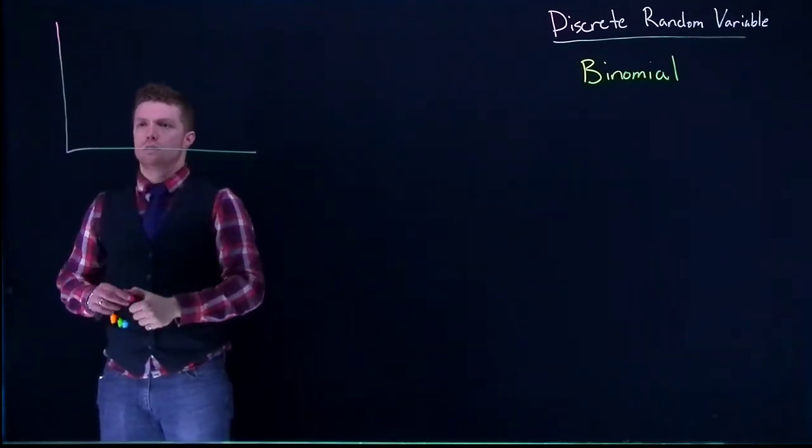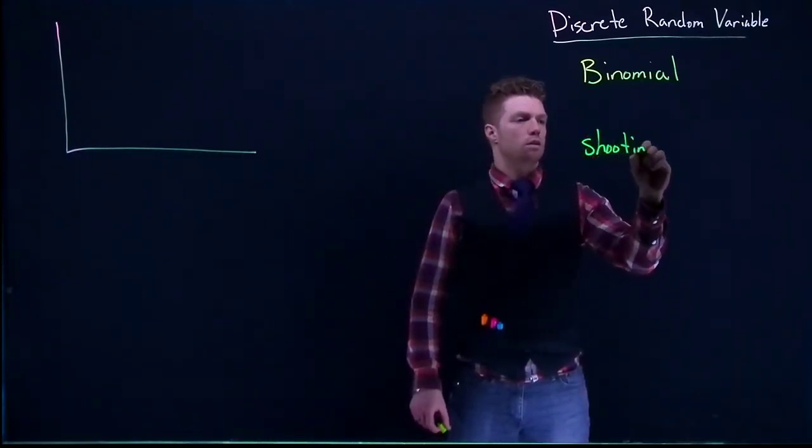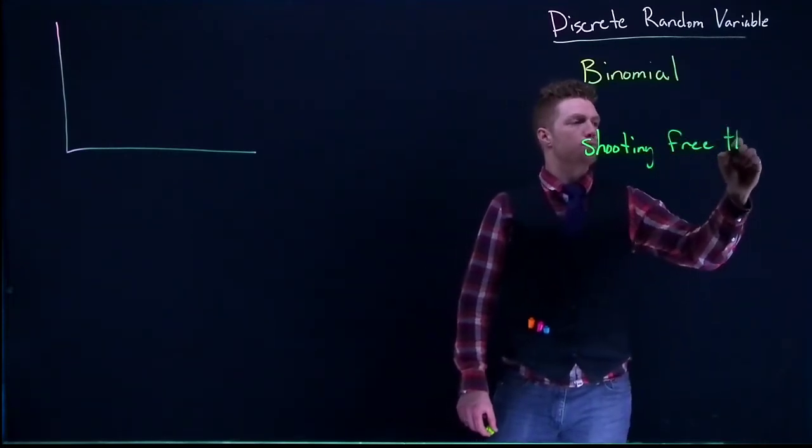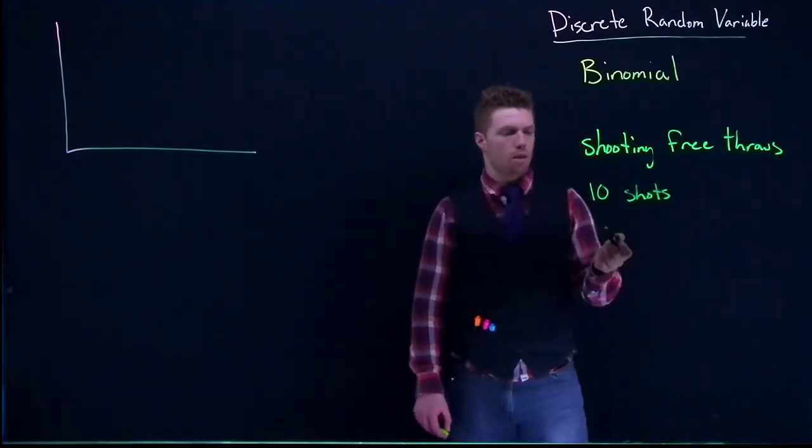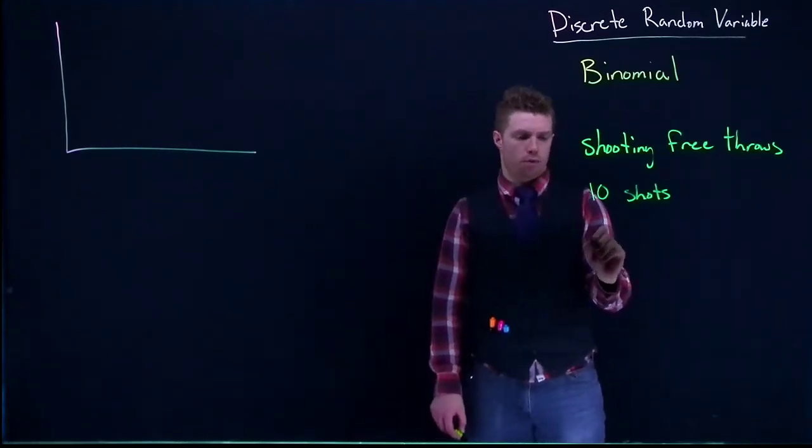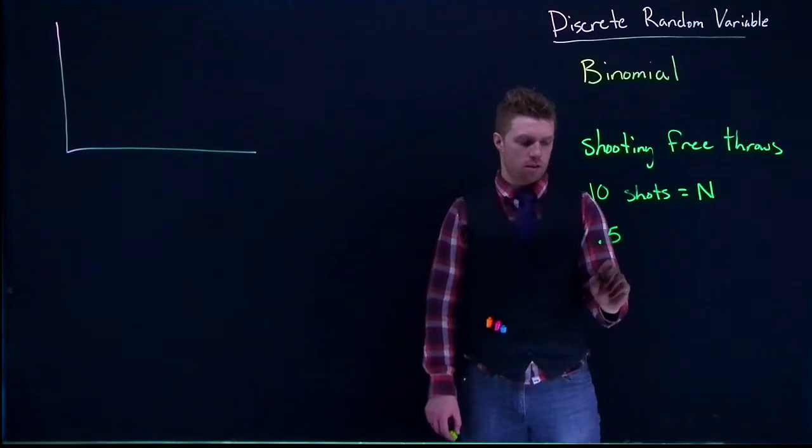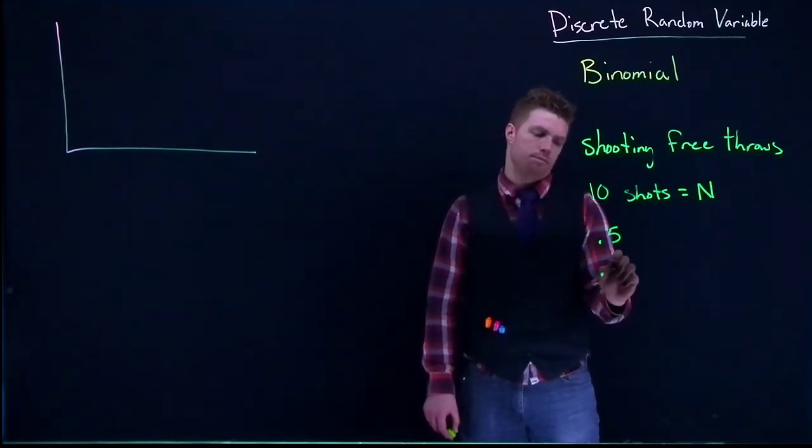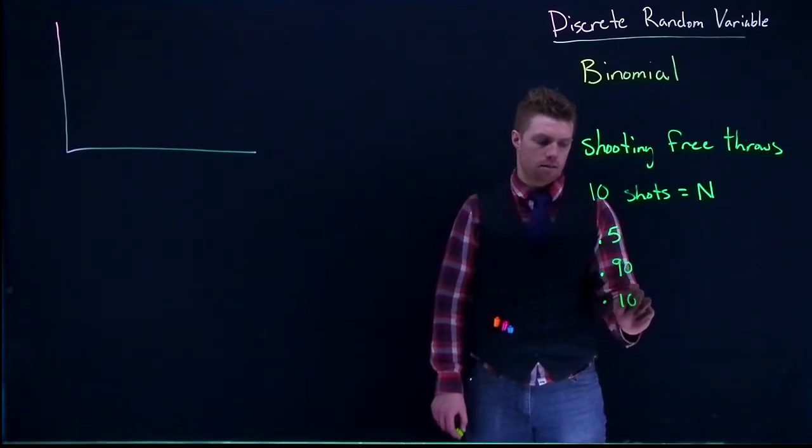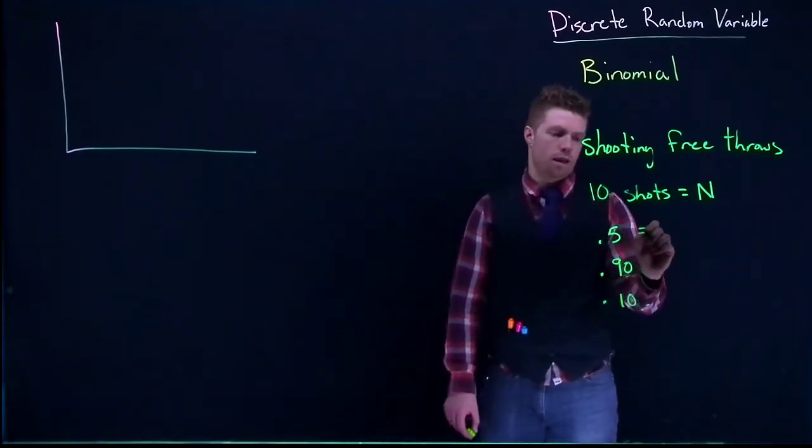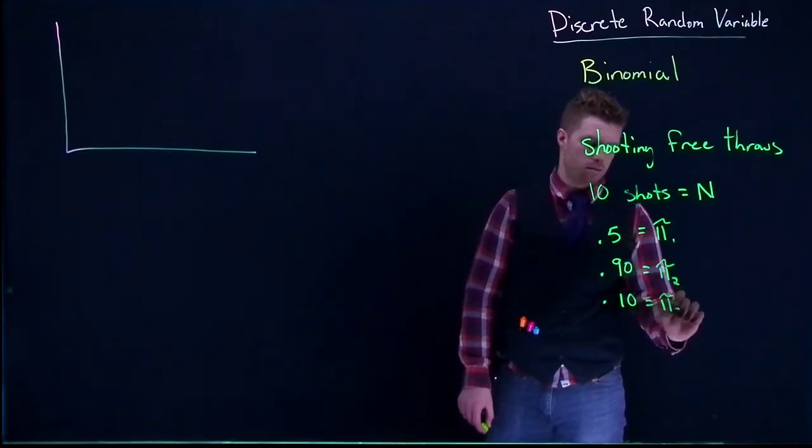It's all really based upon the number of trials that are happening and the probability of success. I'm going to show three possible options for what the probability mass function graphs out to be in a binomial situation. Let's talk about our basketball example again, shooting free throws. We'll do ten shots, so that's our n equals 10. We'll have our probability of success being 50%, one being 90%, and one at 10%. We'll have this be pi 1, pi 2, and pi 3.